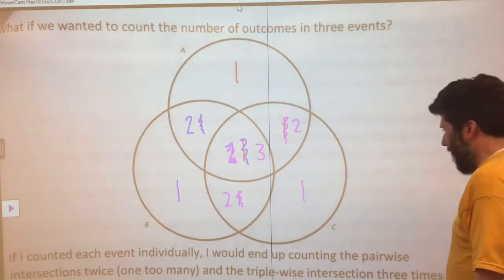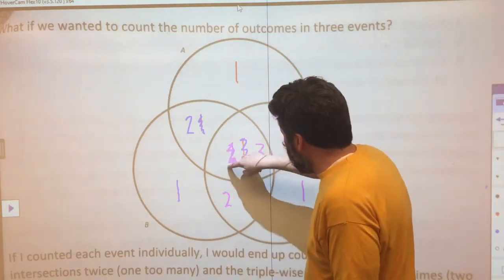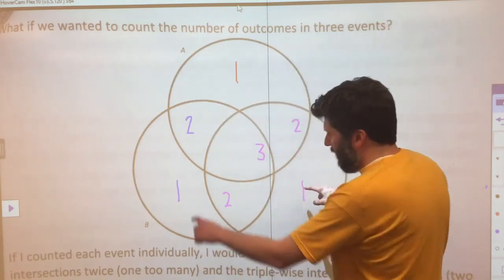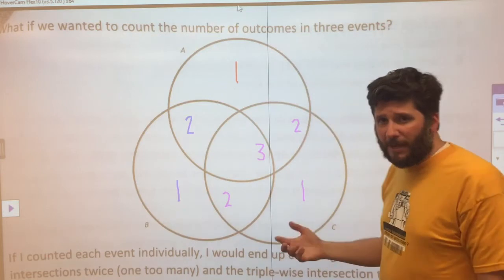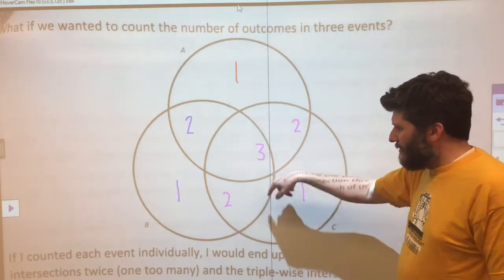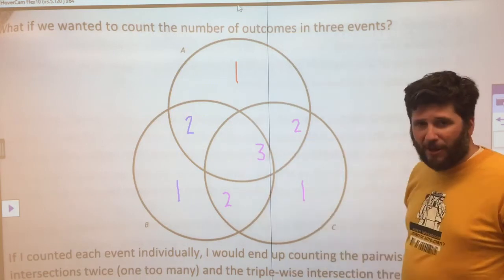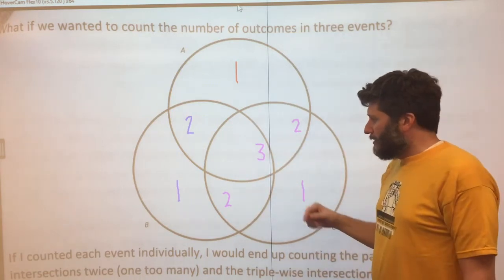Notice that some things are good. The things out here and this one have all been counted once, but I've double and triple counted certain things depending on where they are in the diagram.